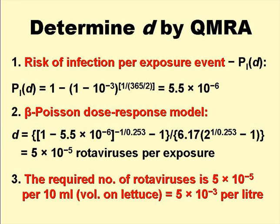We know P(I|AD) — the annual risk of infection from N exposures per year to the pathogen dose D — because this is the tolerable rotavirus infection risk of 10 to the minus 3 per person per year, and N is 365 over 2, as people eat wastewater-irrigated lettuce every second day. We can therefore calculate, as shown in the first equation on the slide, that P(I|D) — an individual's risk of infection from a single exposure to the pathogen dose D — is 5.5 times 10 to the minus 5.